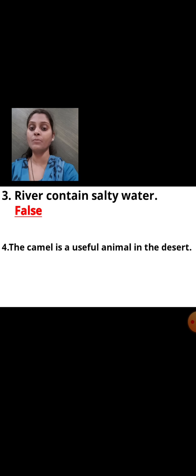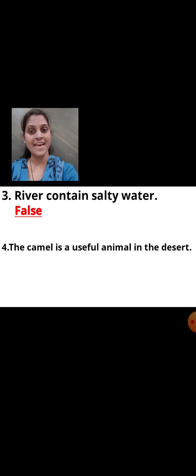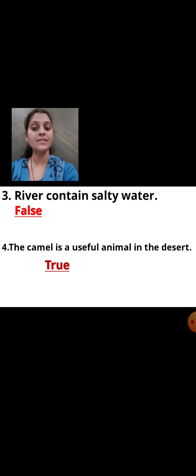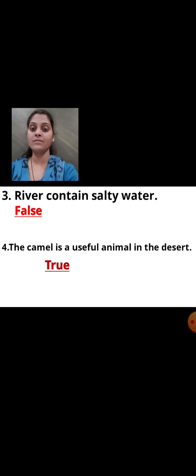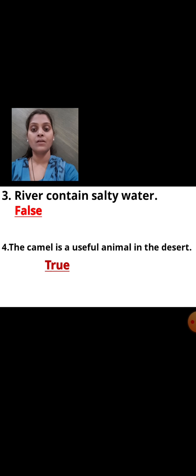Number four: The camel is a useful animal in the desert — the statement is true. Why? Because the camel is known as the ship of the desert. Camel is a useful animal in the desert; it can survive in the desert.